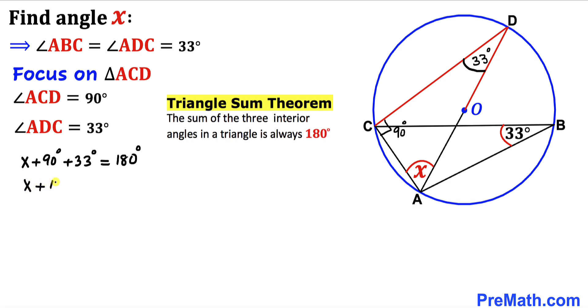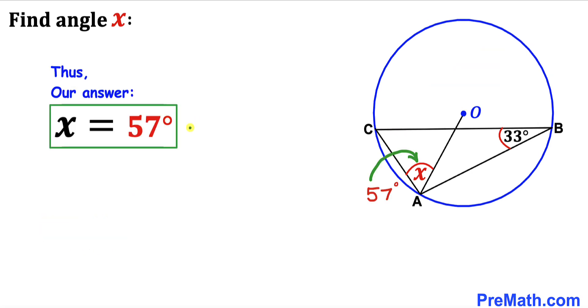x plus 123 degrees equals 180 degrees. Let's subtract 123 degrees from both sides. Therefore, angle x turns out to be 57 degrees.